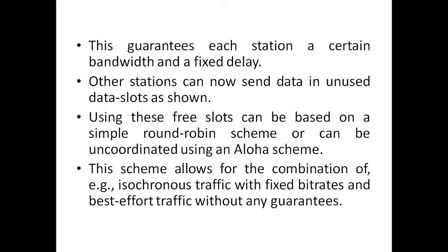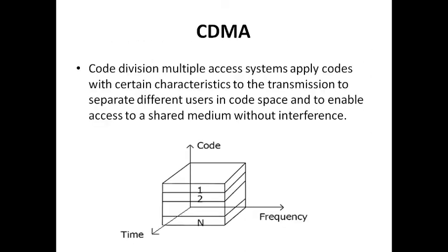The next topic is CDMA — Code Division Multiple Access. This is the last scheme under this mobile access topic. The CDMA system always depends on code, frequency, and time. It transmits data based on a code — a separate code is defined to transmit data from source to destination. CDMA is given as an assignment.